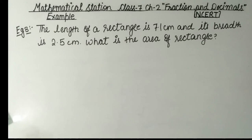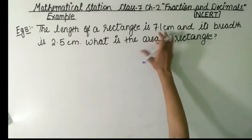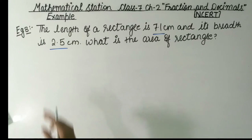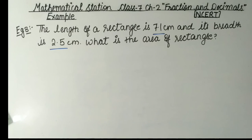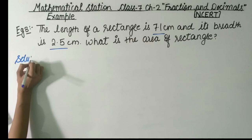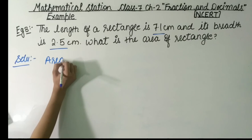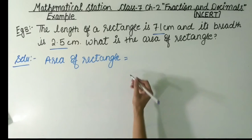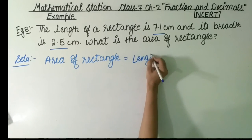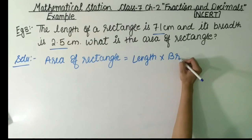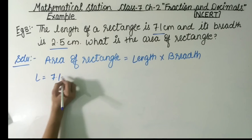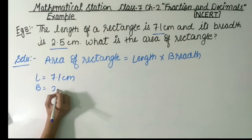The length of the rectangle is 7.1 cm and its breadth is 2.5 cm. We need to find the area of the rectangle. The formula for the area of a rectangle is length multiplied by breadth.